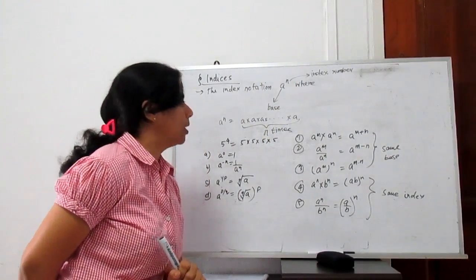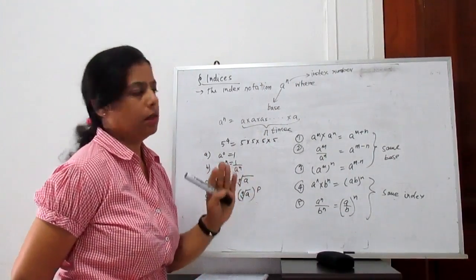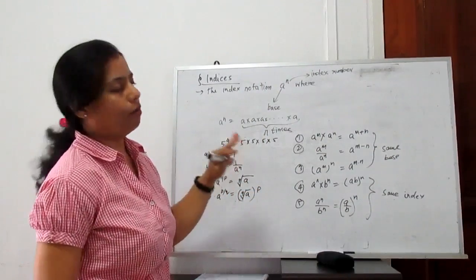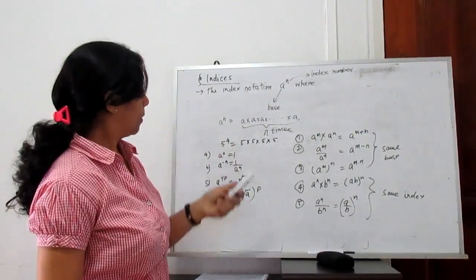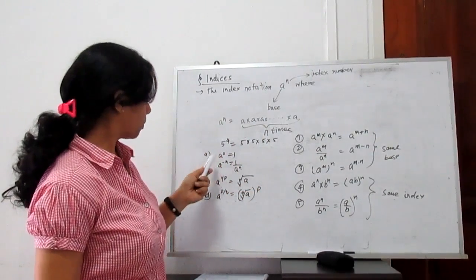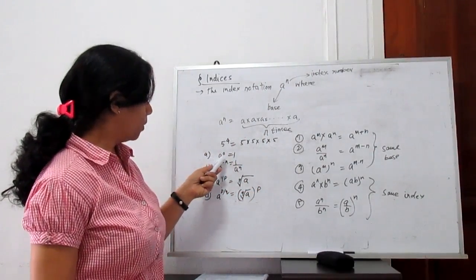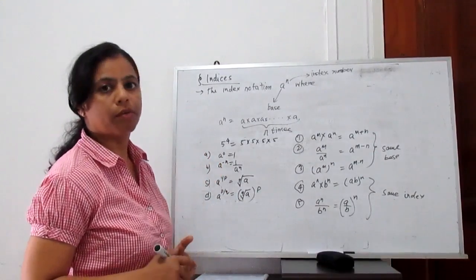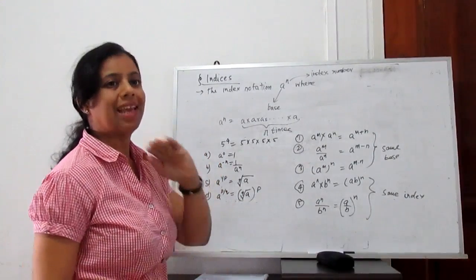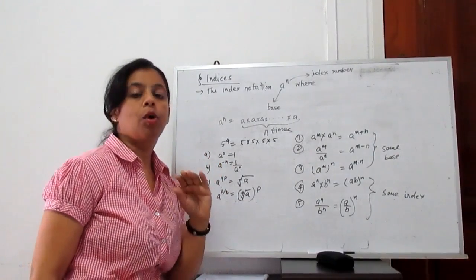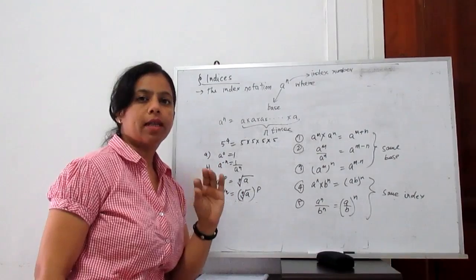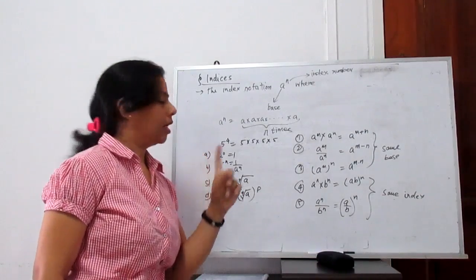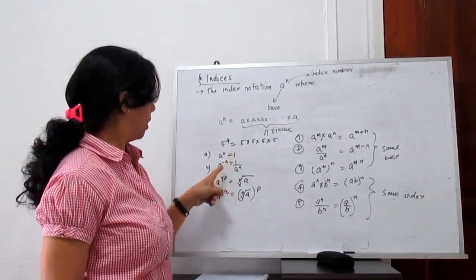So let's proceed with some rules and laws of indices. We all know that a to the power 0 equals 1, meaning any base raised to power 0 gives 1.